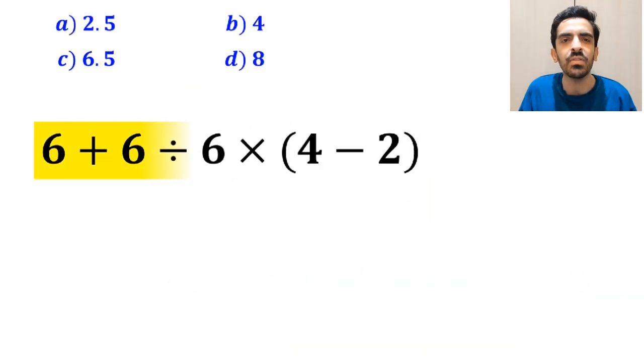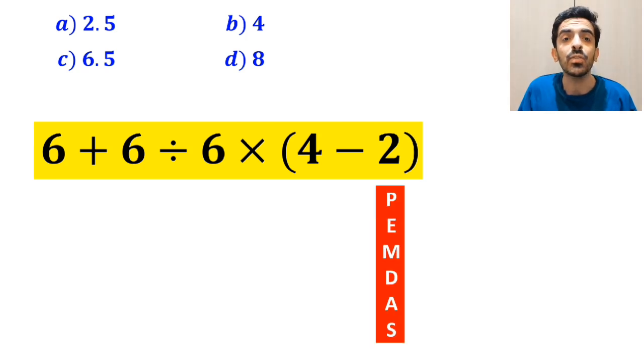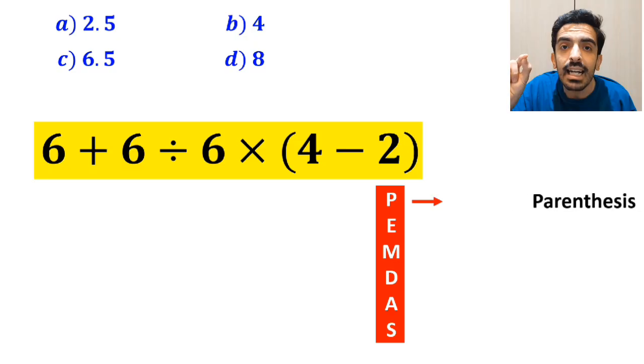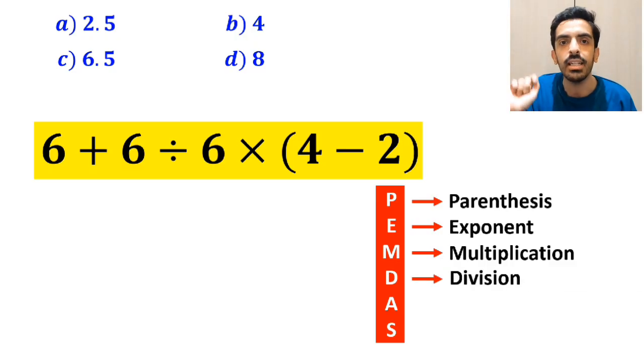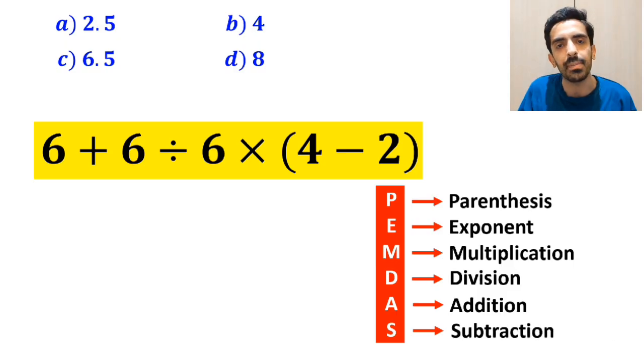Now, let me show you how to solve this expression properly. To solve this problem, we must follow the PEMDAS rule. P stands for parentheses, E stands for exponent, M stands for multiplication, D stands for division, A stands for addition, and S stands for subtraction.